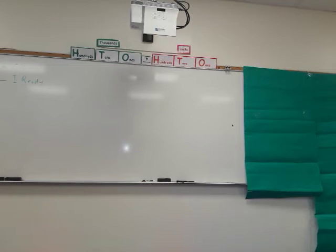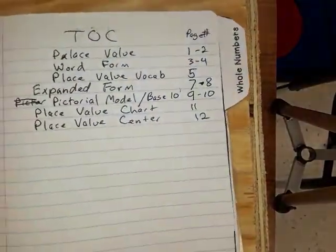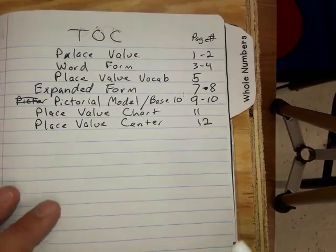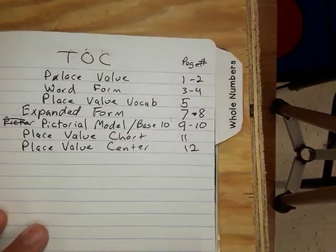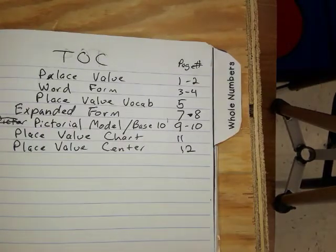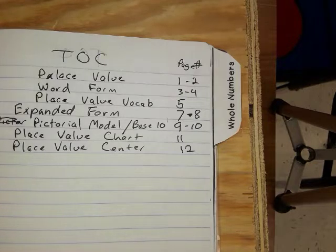Good morning everybody. We're going to go ahead and work on our composition books a little bit. We've been working on decomposing numbers — taking numbers and putting them into expanded form is probably one of the more common ways that we decompose numbers. That's basically taking it apart, breaking it down, and telling what the value of each digit is.